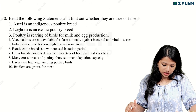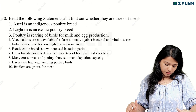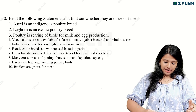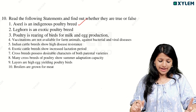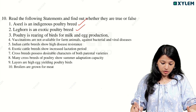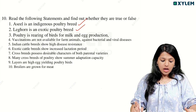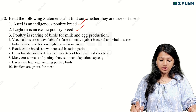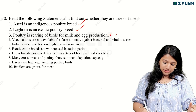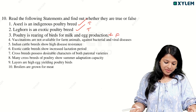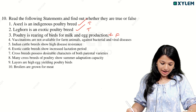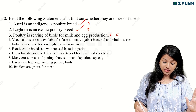Read the following statements and find out whether they are true or false. Aseel is an indigenous poultry breed. Leghorn is an exotic poultry breed — that is true. Poultry is the rearing of birds for milk and egg production — that is wrong. Vaccinations are not available for farm animals against bacterial and viral diseases — that is also false, because vaccinations are actually available.